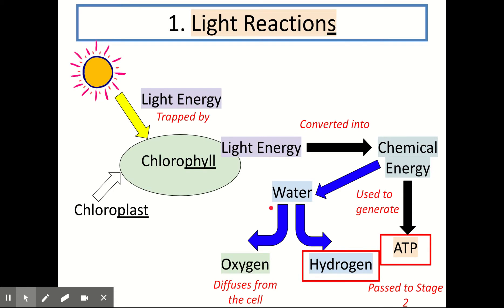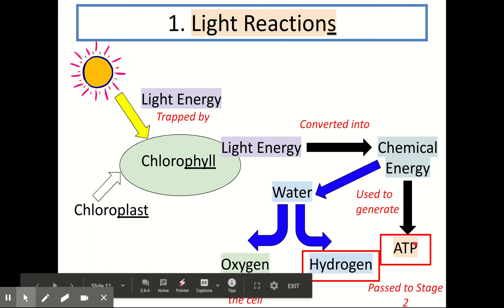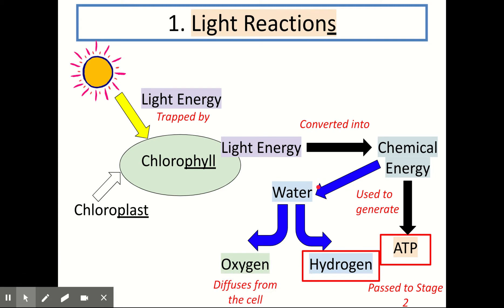This diagram shows you everything you need to know about the light reactions. If you learn this diagram off by heart, you'll be able to answer any type of question on the light reactions, including extended response questions. During the light reactions, light energy from the sun is trapped by chlorophyll inside the chloroplast. This light energy is then converted into chemical energy, which is used to generate ATP. The chemical energy is also used to split water into its two component parts — oxygen and hydrogen. Oxygen diffuses out of the cell, whereas hydrogen, along with the ATP, is passed to stage 2.